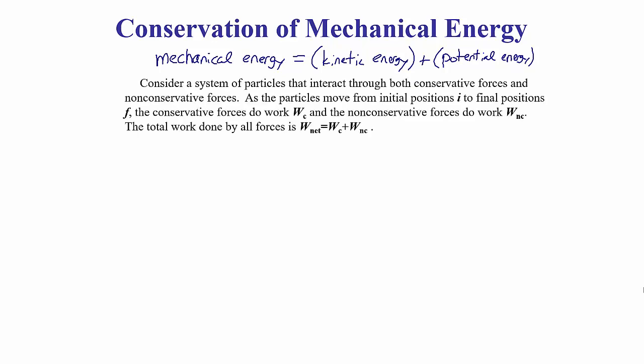If I have an object moving from some initial point I to a final position F, and there are conservative and non-conservative forces doing work, then the total work done on the object is the work done by the conservative forces plus the work done by the non-conservative forces. This is just what net work means — find the work done by each individual force and add them all together, grouping conservative and non-conservative separately.